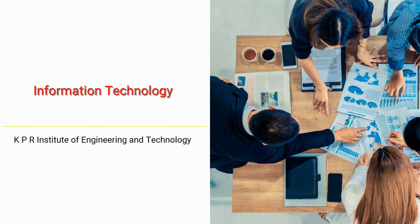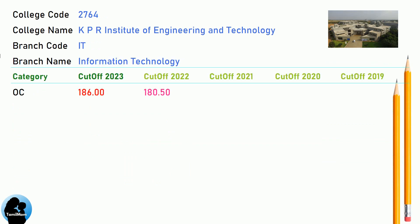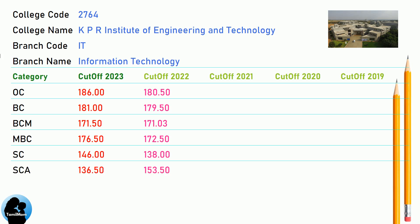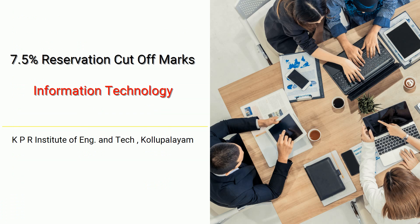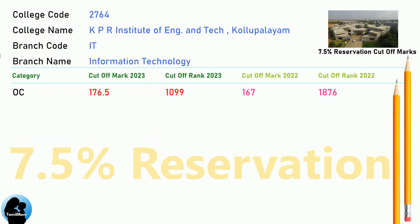DNA Cut-off for KPR Institute of Engineering and Technology in Information Technology. DNA 7.5 Reservation Cut-off for KPR Institute of Engineering and Technology in Information Technology.